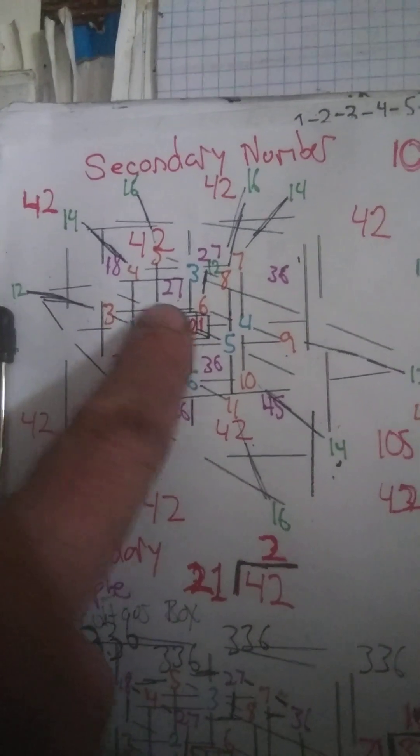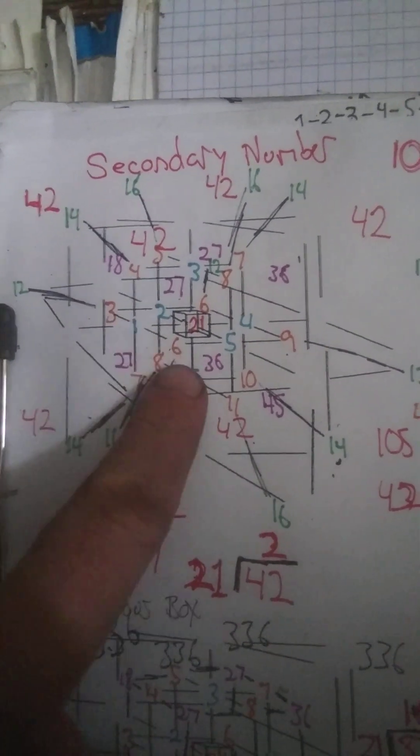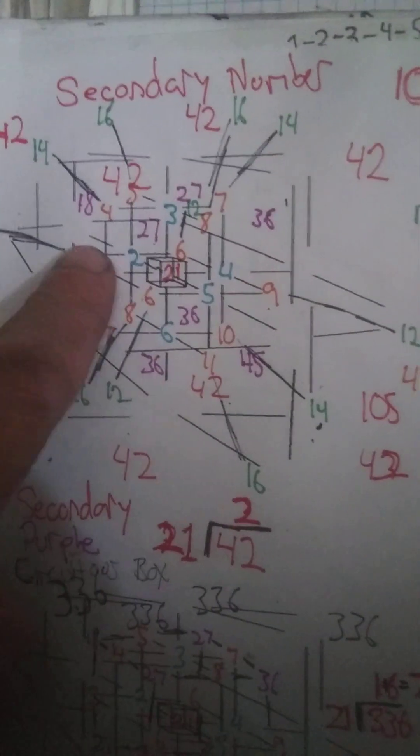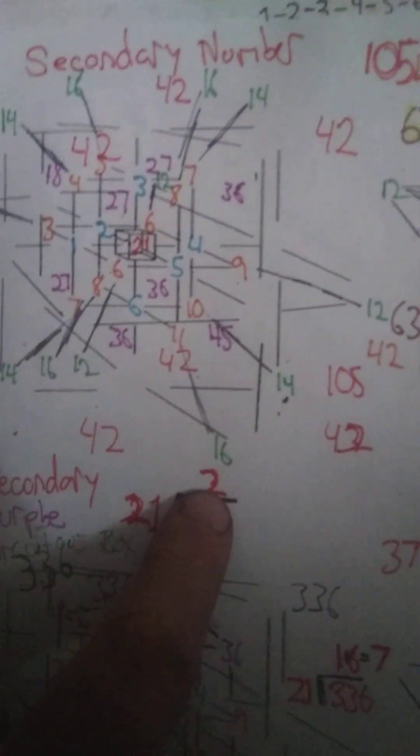So it's a step down from a normal ghost number cube, which is the central ghost number three times, which would be 63. So I call this sort of like a proto-secondary number ghost number, or proto-normal—I'll figure it out. But it's two times the central ghost number, not three times.